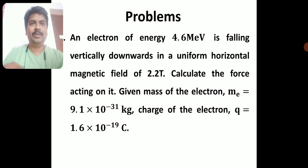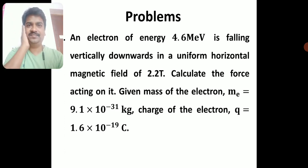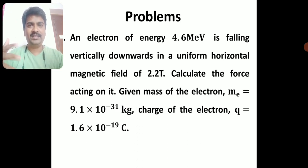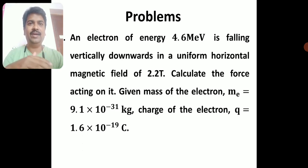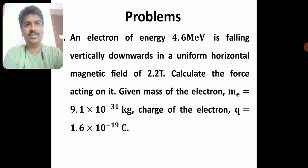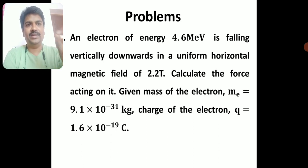Given: mass of electron m_e = 9.1 × 10⁻³¹ kg, and charge of electron q = 1.6 × 10⁻¹⁹ coulombs. The energy of the electron is 4.6 MeV, which can be converted into joules. The horizontal magnetic field is 2.2 tesla. Sometimes students may not be given mass and charge of electrons, but you need to know these standard constants while solving problems in electro- or magnetostatics.